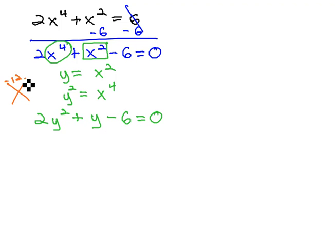2 times negative 6 is negative 12, adding to 1. It's going to be 4 and 3 if the 3 is negative. And so we can set up our factors. To get 2y squared, it must be 2y times y.